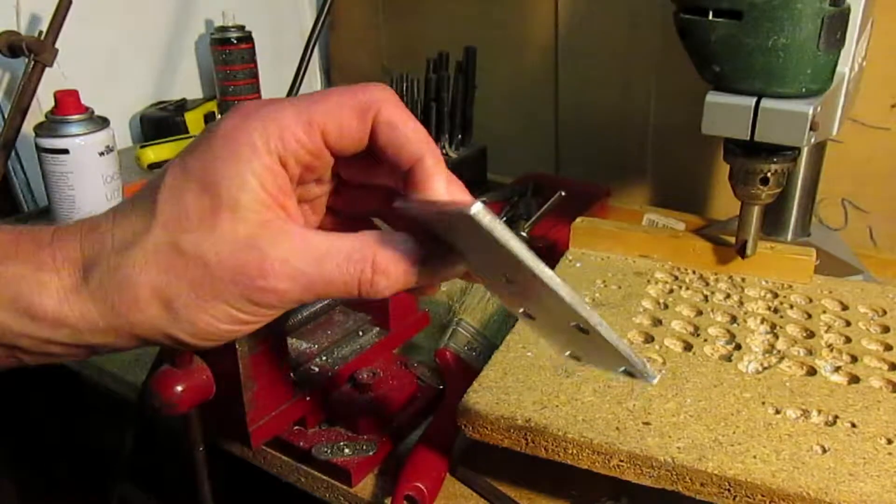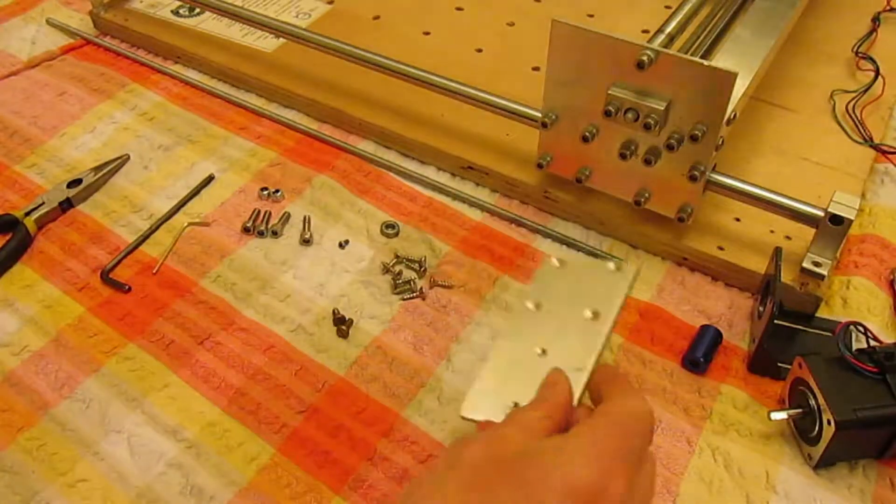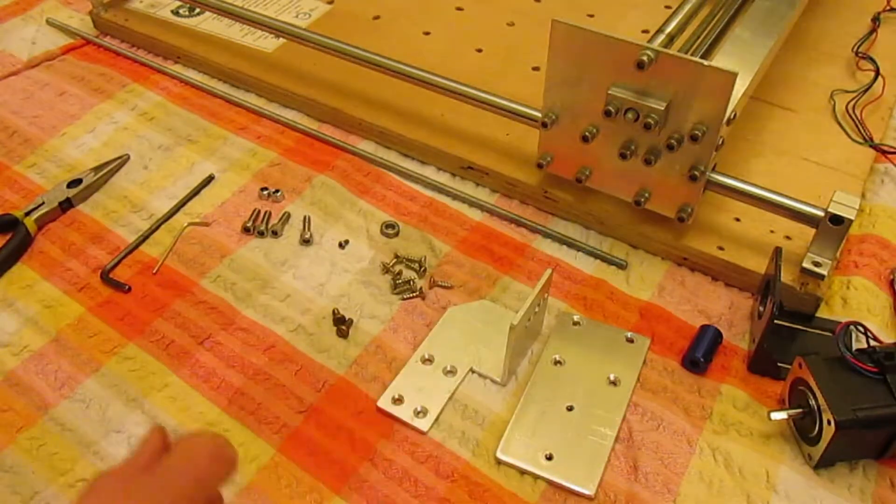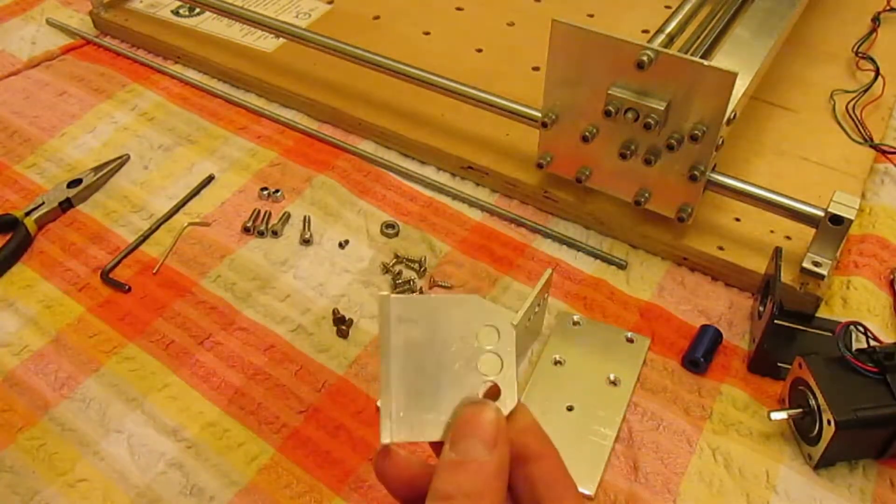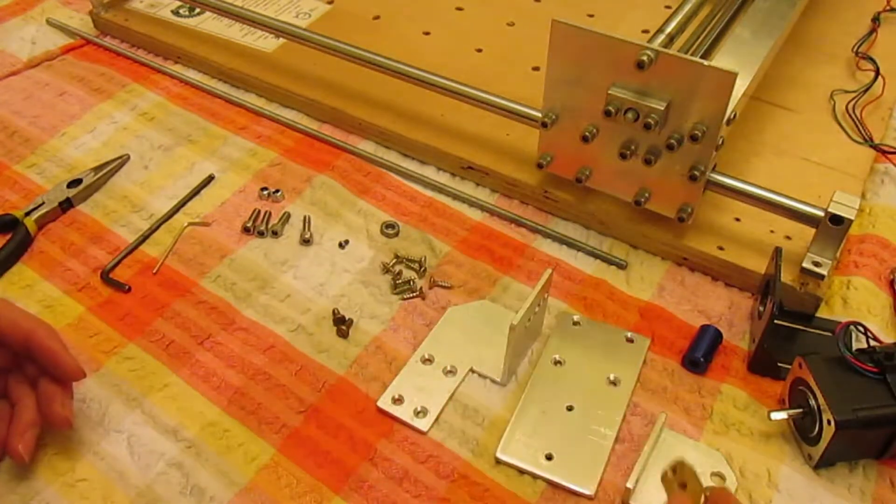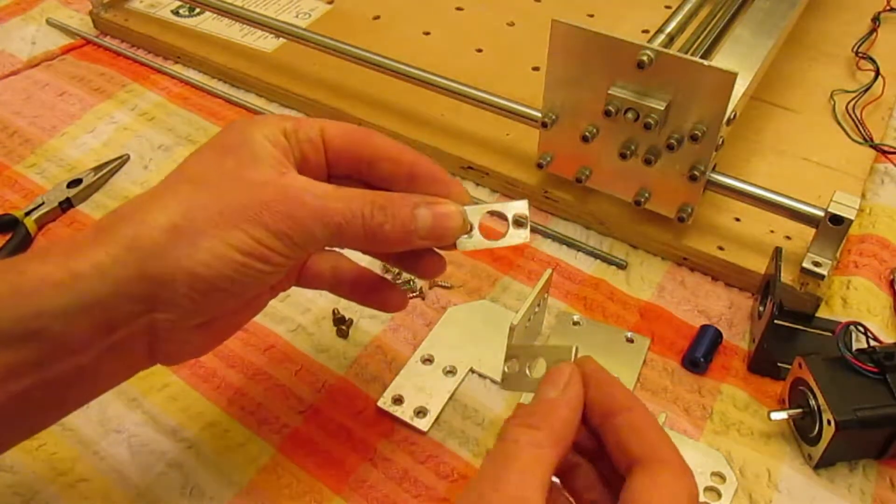The finished motor support plate. I also made a bearing support bracket, a lead screw nut support bracket, a lead screw brass nut, and two little plates to hold the bearing.